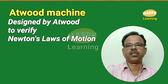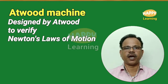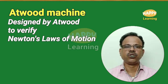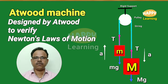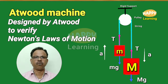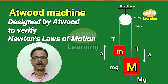The Atwood machine is designed by Atwood and it is used to verify Newton's laws of motion. The Atwood machine basically consists of a pulley, a string, and two blocks. The pulley is suspended from a rigid support. A string is carried over this pulley and two blocks of different masses are connected to the ends of this string.